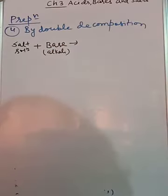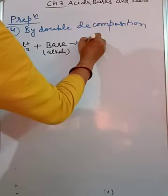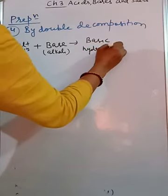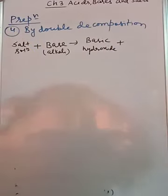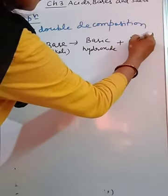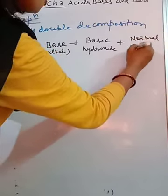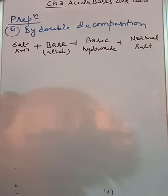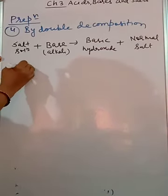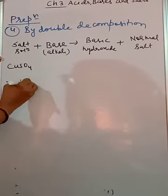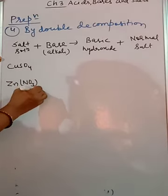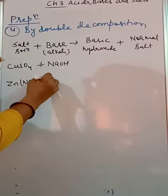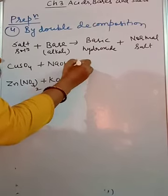Then what we are getting? Another salt plus basic hydroxide. What you are going to take there? Normal salt. Like salt solution, you take the example of copper sulfate or zinc nitrate. And alkali take here NaOH, KOH.